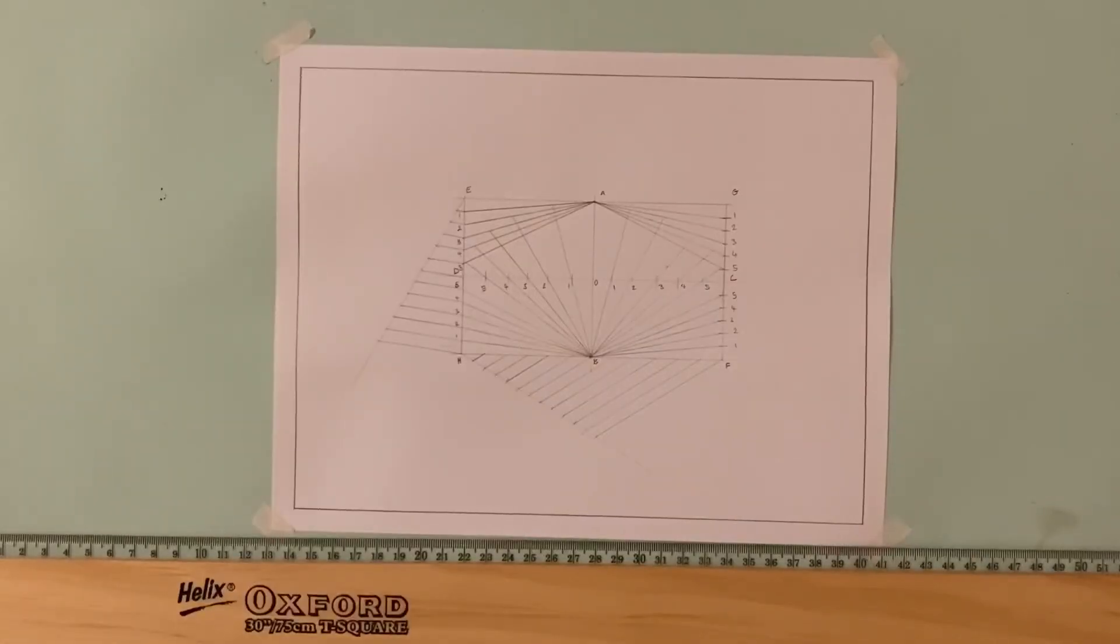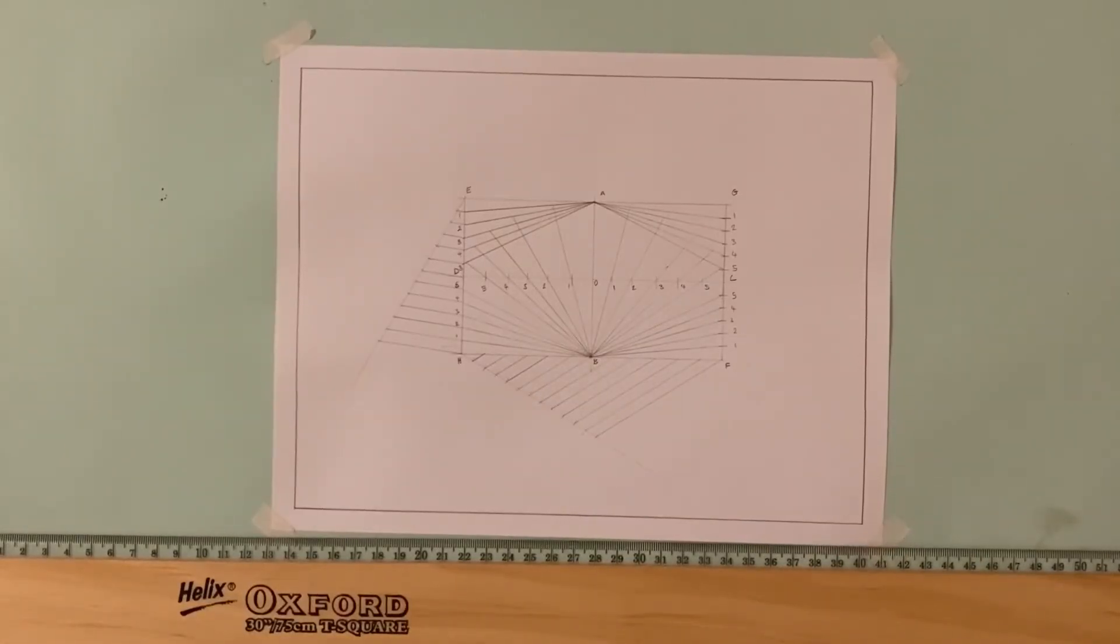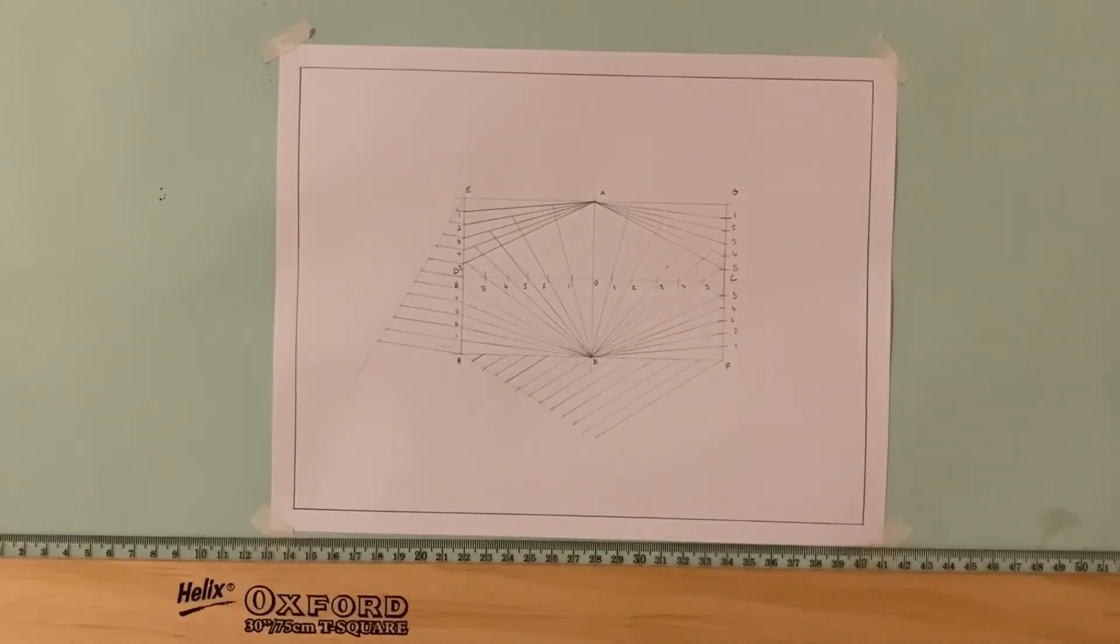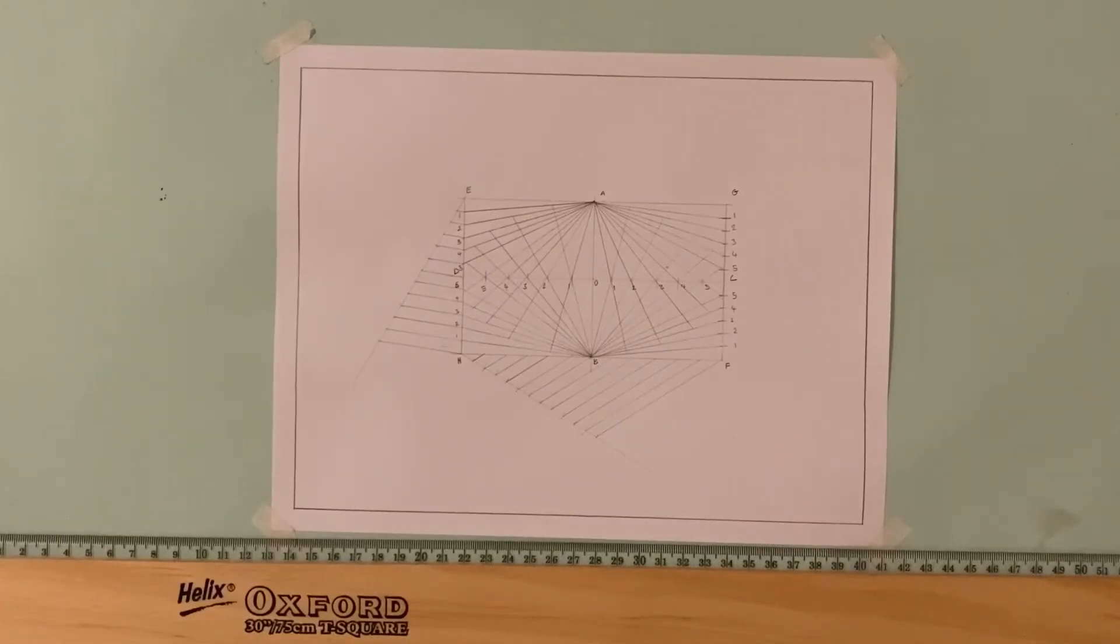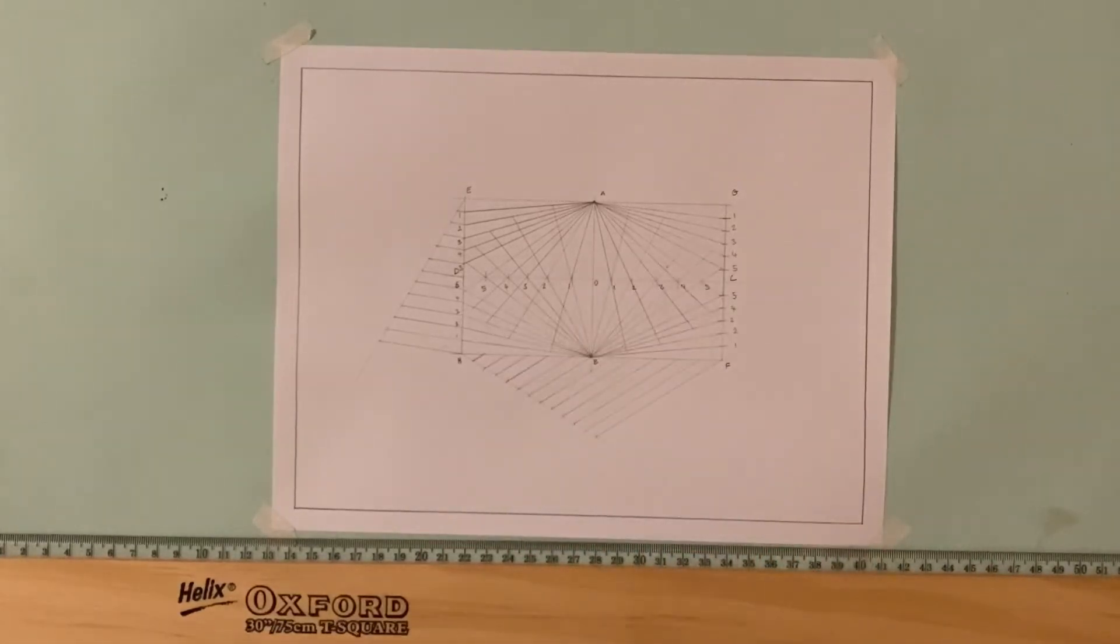Now next, we're going to do the same from point A on the lines on the lower part. Great. Now we have all the points of our ellipse marked out, so we have all our locus points.